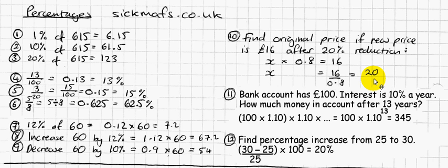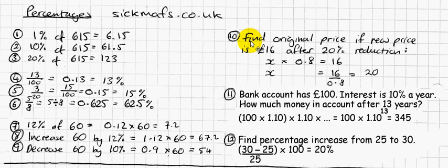Some people who don't really get maths might say: why don't I just work out 20% of 16 and add it on to 16? But no — that would be wrong. If I worked out 20% of 16, that's not the same as working out 20% of the original amount. 20% of the original amount would be greater than 20% of 16, because the original amount was greater than 16. That's why that trick won't work.